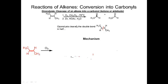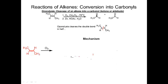Think about it like this: when I was a kid I used to break sticks over my knee. You think about this double bond the same way — it's just like breaking a stick over your knee and taking each carbon that's in the double bond and writing it as a carbonyl. So C double bond O here and then C double bond O here. Let's look at the reaction and see how it works.